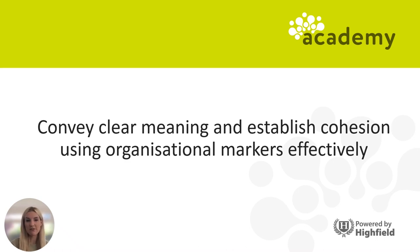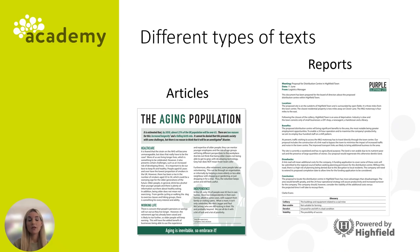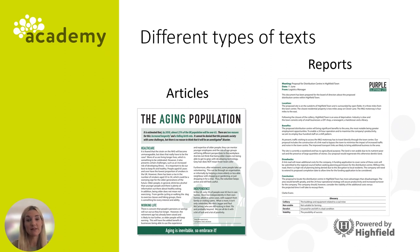Before we break down what this criteria is actually asking us, let's revisit the types of texts and organisational markers. You may have come across articles and reports already. Here you can see that each text is clearly laid out using organisational markers such as subheadings, text boxes, tables, etc. These really help to lay out the text nicely and make it easier for the reader to understand the information. Pay close attention to the subheadings used in the report — we'll revisit some of these later.